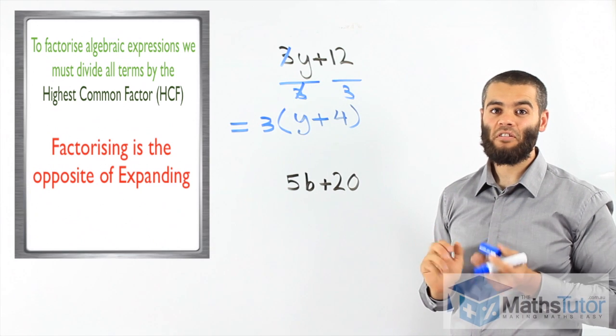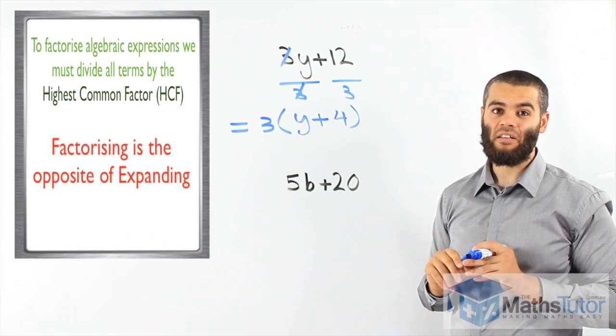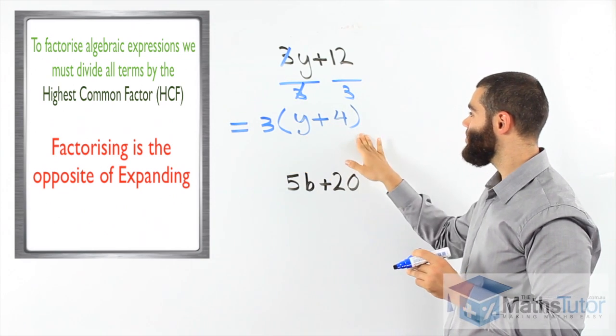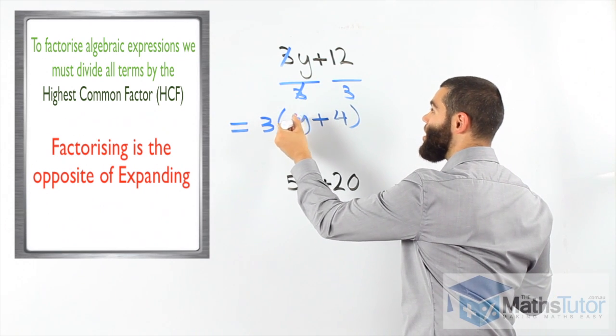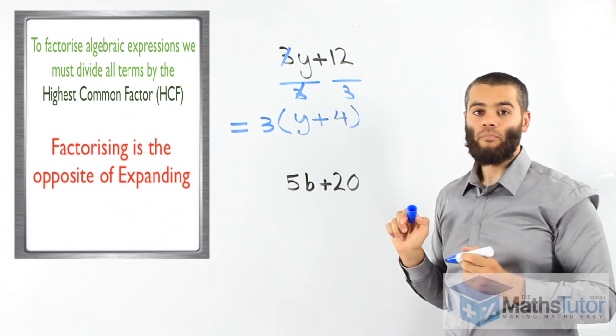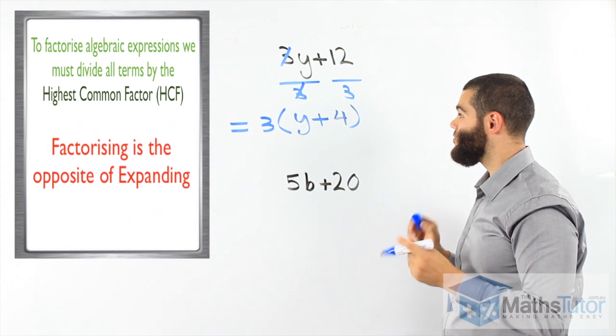Factorising is the opposite of expanding. When we were expanding, we had our question like this and we multiplied 3 times y and we got 3y, 3 times positive 4 and we got plus or positive 12.